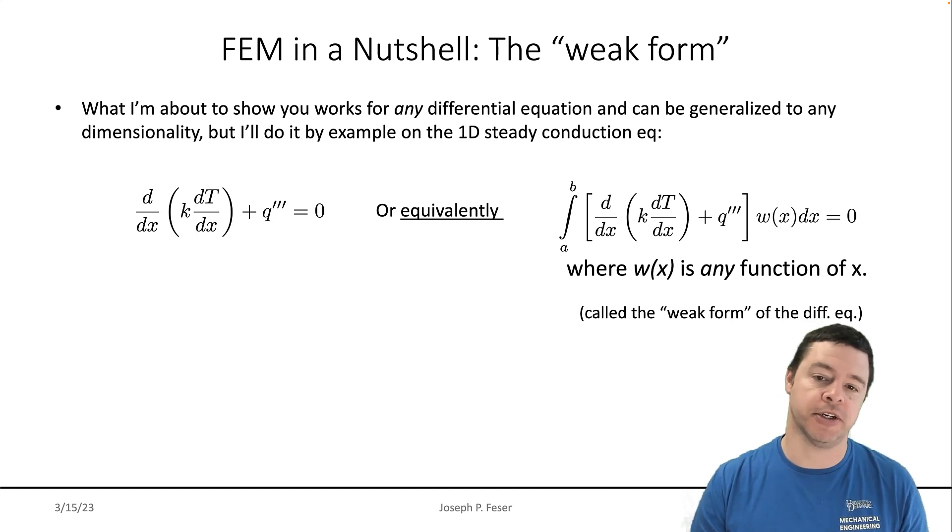If you can integrate any solution or approximate solution for T(x), and it turns out that for any function you choose, you get zero, then I claim that is exactly equivalent to the original equation.